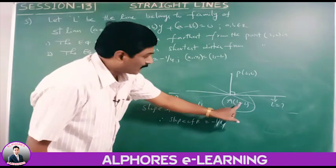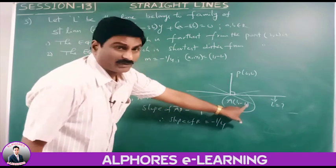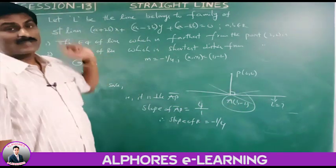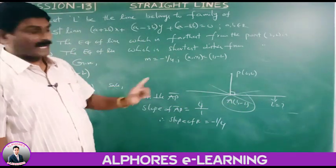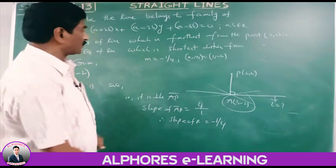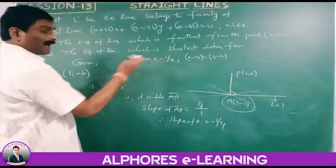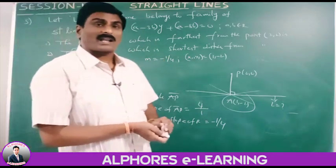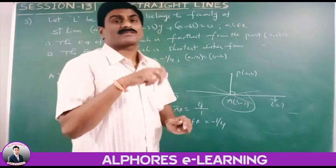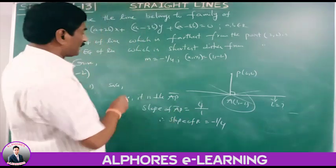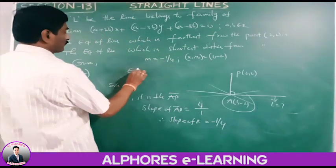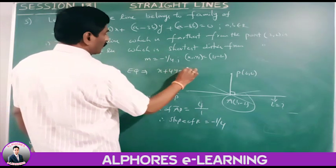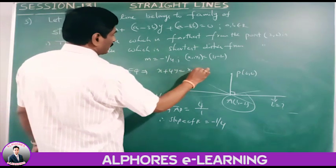The required line passes through A(1, minus 2) with slope minus 1/4. The equation of the line is x plus 4y equals x1 plus 4y1 equals 1 plus 4(minus 2) equals 1 minus 8 equals minus 7.